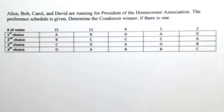Alice, Bob, Carol, and David are running for president of the Homeowner Association. The preference schedule is given. Determine the Condorcet winner if there is one.